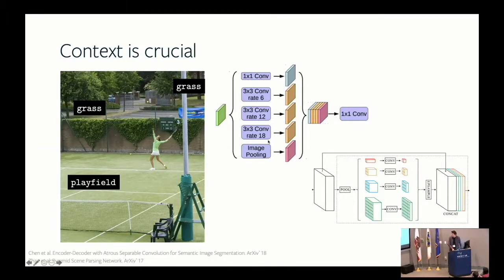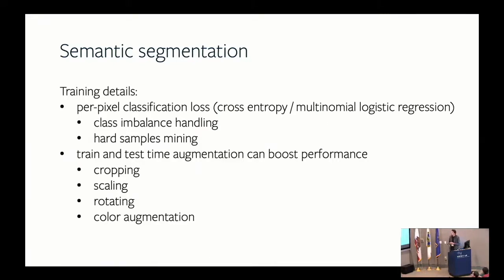Another way to get global context is using different pooling scales: given a feature map, you do poolings at different scales, sometimes pooling the entire feature map to a single spatial location, then upsampling it back. This combination of dilated convolutions and multi-scale pooling has proven very useful for semantic segmentation.